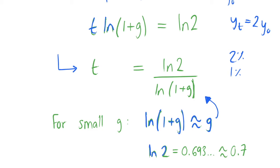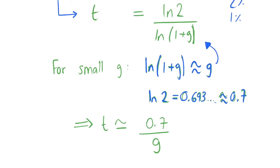In the numerator, we know that the natural log of 2 is equal to 0.693 and so on, and we'll say that this is roughly equal to 0.7 so that we get a nice round number in the numerator. When we substitute in these approximations in the denominator and in the numerator, we will see that t is now roughly equal to 0.7 over g.